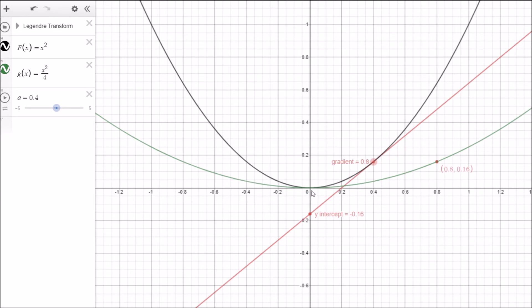So it means that this new function here in green contains all the information that we require in order to recreate the original function in black. Now let's have a look and we can see how that is the case, that we can regenerate this function y equals x squared from this other function here, which is the Legendre transform.